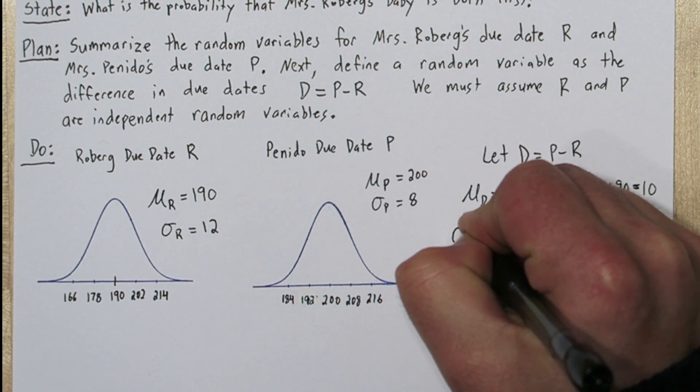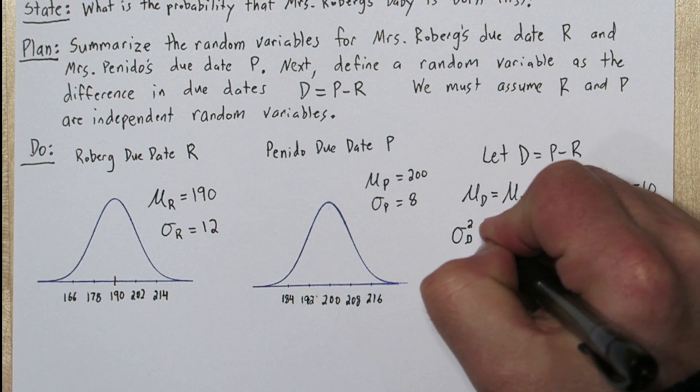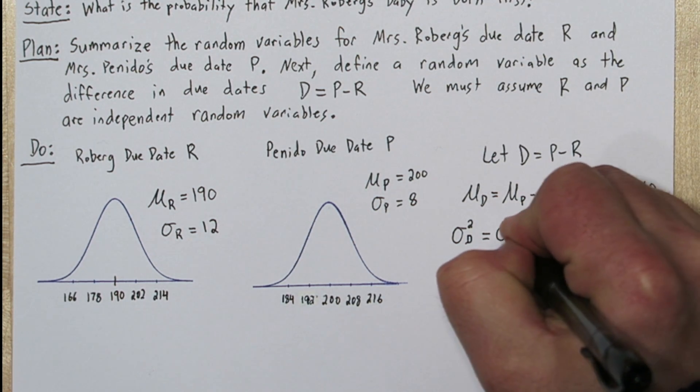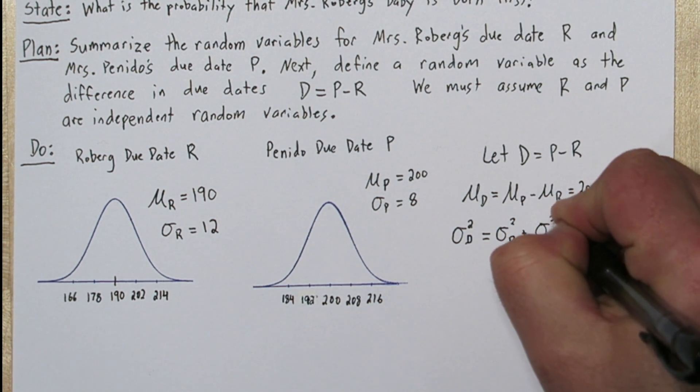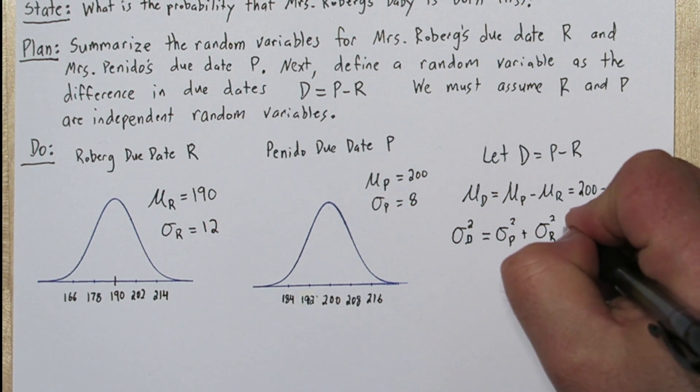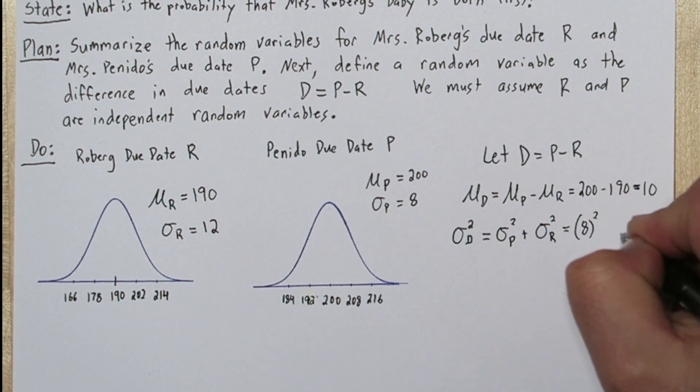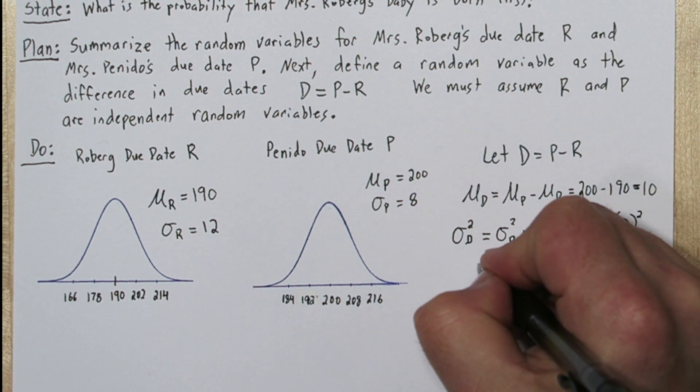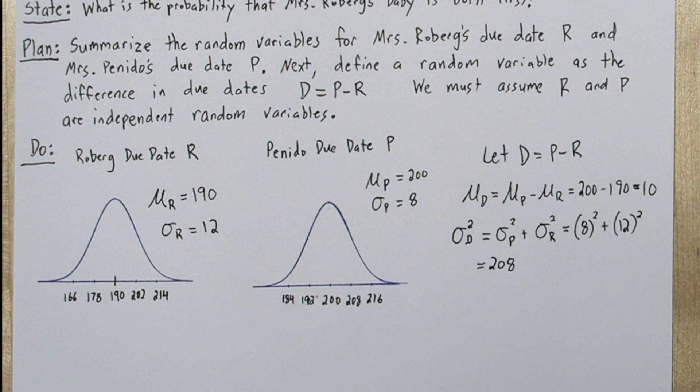When you combine random variables, start by calculating the variance, not the standard deviation. So the variance of the difference is actually going to be the sum of the Paneto variance plus the Roeberg variance. And variance is just standard deviation squared. So we have 8 squared plus 12 squared. That ends up being 208.